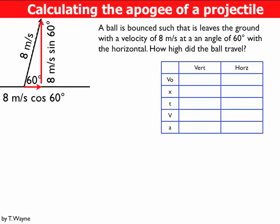Next, I'll start with the table to organize all my values. I have kinematics in the vertical direction and kinematics in the horizontal direction. So when I look at this vertically, I know that it's traveling at 8 meters per second sine 60 degrees. Horizontally, I know it's traveling at 8 meters per second cosine 60 degrees.